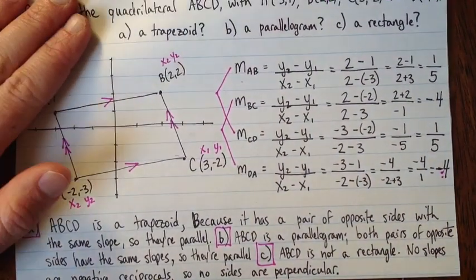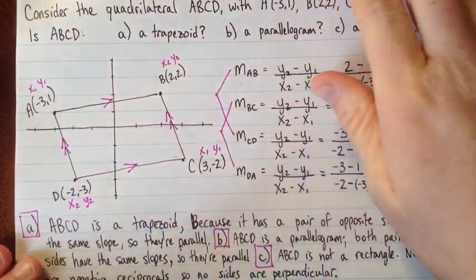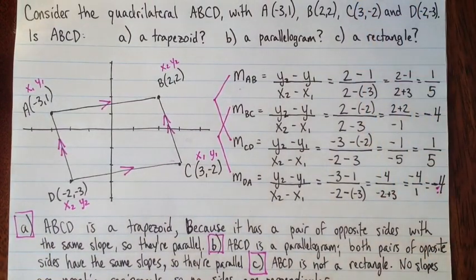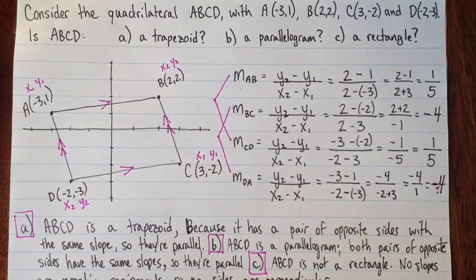Just to review, if you want to classify shapes with their slopes, calculate the slopes of all the sides in a nice organized way, then compare. If you have slopes that are the same, the sides are parallel. If slopes are negative reciprocals, then sides are perpendicular. Good luck.